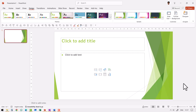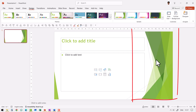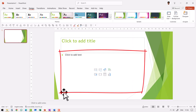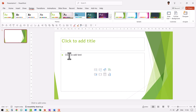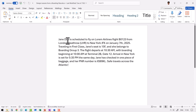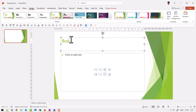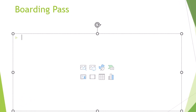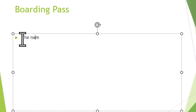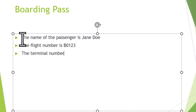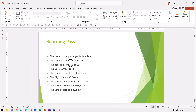This right away puts me at a disadvantage. The reason is I lose a lot of valuable real estate to this unnecessary design piece. Now I only have this much space to capture all the information. You also see the size of the font — it is very small. Then comes the issue of how I capture the information. I start with the title, which is 'Boarding Pass.' Then I start writing my information, and the way that I write the information is: 'The name of the passenger is Jane Doe, the flight number is B0123, the terminal number is 12.' I write full sentences to capture the information, and I end up creating a slide that looks like this.